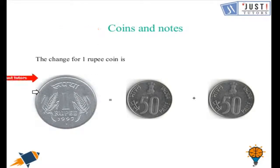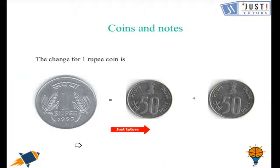As you can see, this is a 1 rupee coin. 2 coins of 50 paise can make a 1 rupee coin. Let's move ahead.